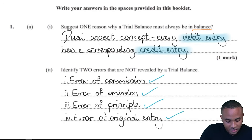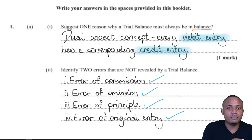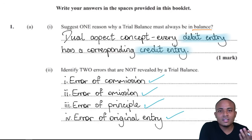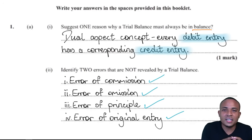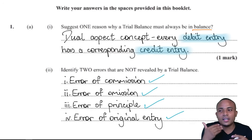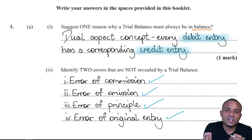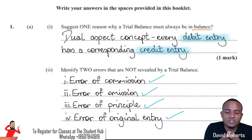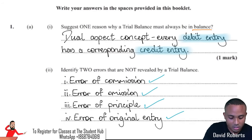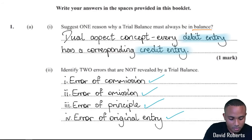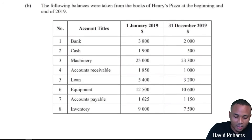Finally, we have the error of original entry. This is where the wrong number is entered — for example, instead of entering 768, you enter 786 — and you enter that incorrect number on both the debit and credit sides. Therefore, the trial balance will balance, but the information is wrong. That is also an error.